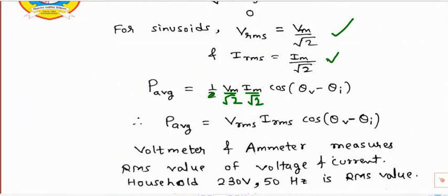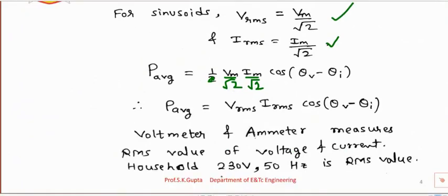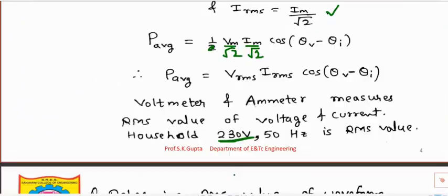Your voltmeter and ammeter measure the RMS value of voltage and current. In your household you might have heard 230 V — that 230 V is nothing but the RMS value, not the peak value of voltage.